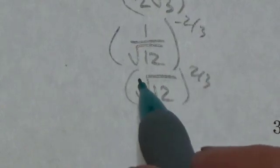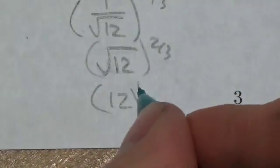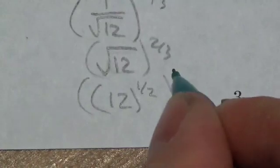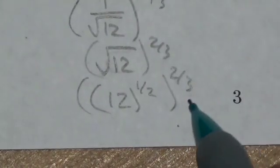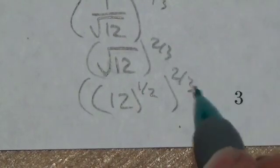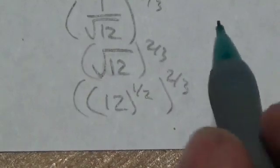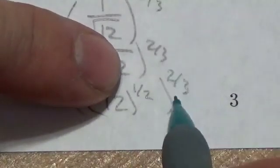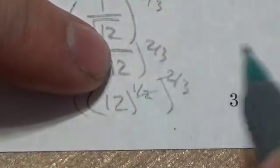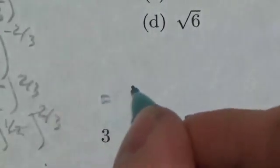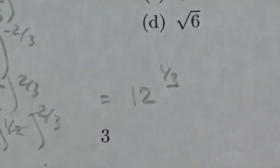That's a little awkward to work with — a radical with a rational exponent. The easiest thing is to make that, instead of being root 12, write it as 12 to the 1 half to the 2 thirds. That's a lot easier to work with and means the exact same thing. Now I've got a power of a power, so I just multiply the exponents: 1 half times 2 thirds — the 2s cancel — and I'm left with 12 to the 1 third.